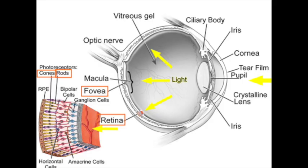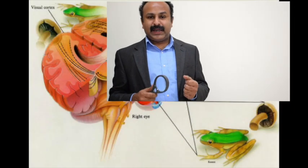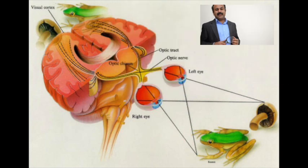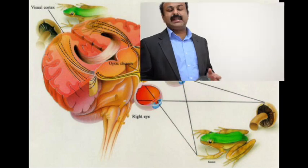Our retina consists of a large number of optical sensors. These optical sensors convert light signals into electrical signals, which are sent to the brain through optic nerves. Our brain processes the signals and produces the image.